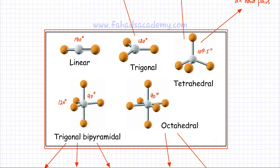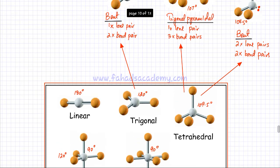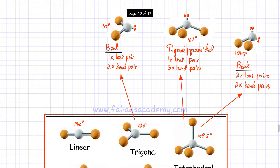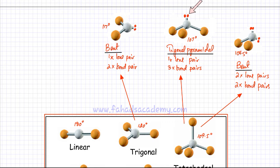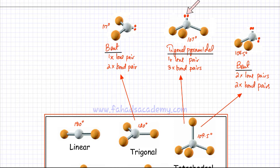There are going to be two variations of this shape. One variation is that instead of having four bonds, one side has a lone pair of electrons — there is no atom attached, but there is a lone pair. The rest are three bonds. If you have three bonds and one lone pair, it's going to look like a pyramid. This is called a trigonal pyramidal arrangement.